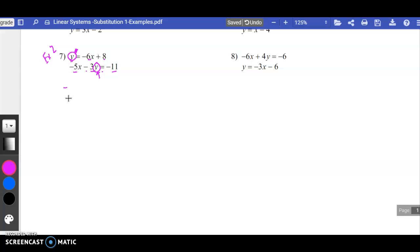What that looks like, rewriting the equation: negative 5x minus 3y equals negative 11. I'm going to replace that y with what it was equal to, and that's negative 6x plus 8.